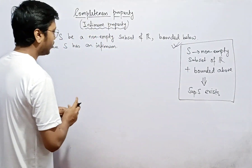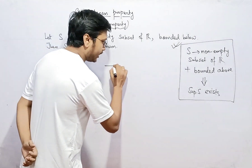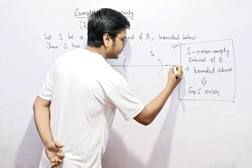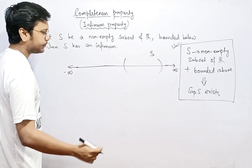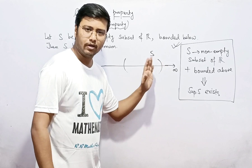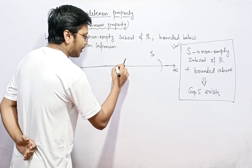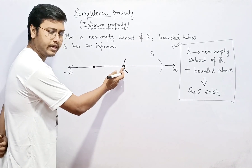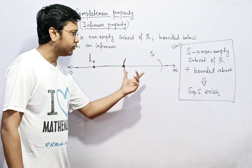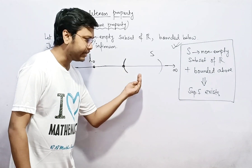It is given that S is a non-empty subset of real numbers and it is bounded below. Let's take a pictorial view: S is some subset of the real line. It is mandatorily bounded below, and whether it is bounded above or not doesn't matter. The lower bound may be somewhere to the left of where S starts — let's call it L0, so L0 is a lower bound of the set S.